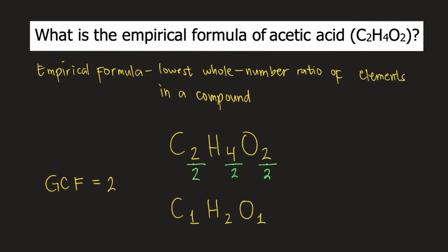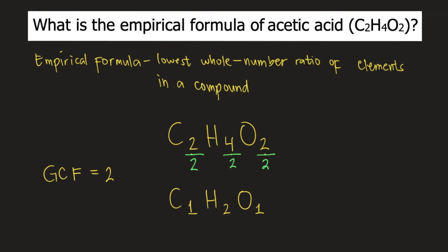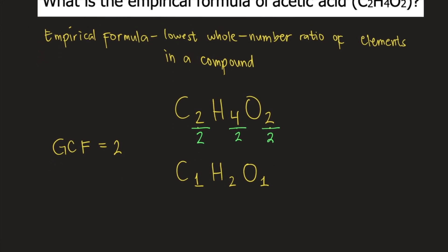In chemistry, we don't usually write the number 1 in chemical formulas. So, C1H2O1 is simply written as CH2O. And this is the empirical formula of acetic acid. Thank you.